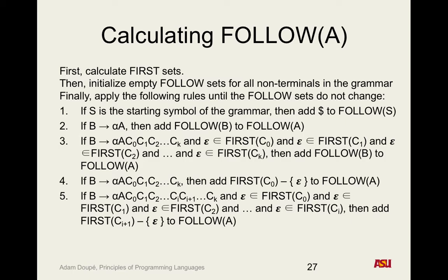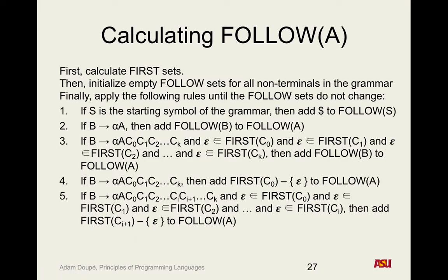Mechanically: start at the symbol following the non-terminal you're interested in, add its first set to A's follow set. Does that symbol have epsilon in its first set? If so, add the following symbol's first set to A's follow set. Do you start immediately to the right of whichever one you're interested in? Yes, immediately to the right. For rule two: is A the far rightmost non-terminal in this production rule? If yes, apply rule two. If no, check if all symbols to the right have epsilon in their first set.